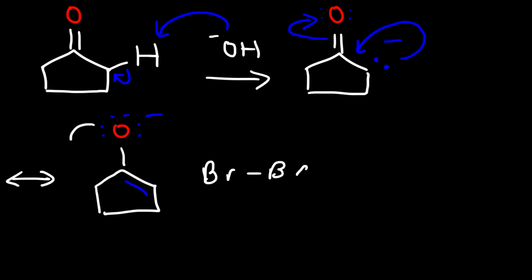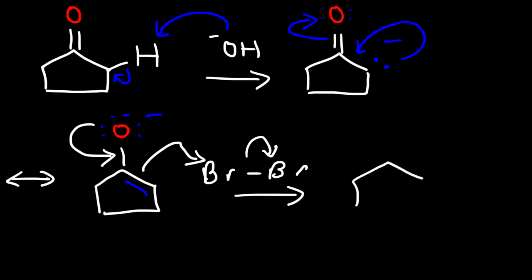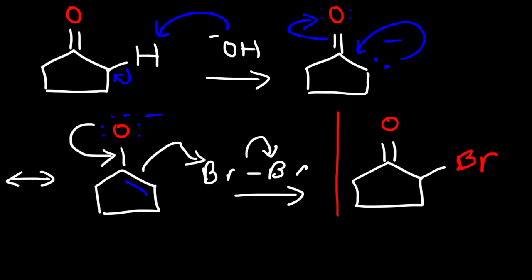At this point we're going to react the enolate with Br2. We reform the pi bond, causing the double bond to attack the bromine molecule. And that's how we show the alpha halogenation of ketones under basic conditions.